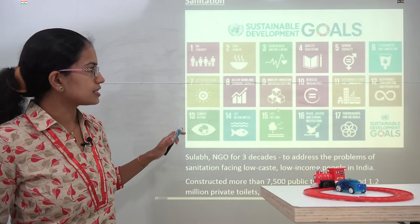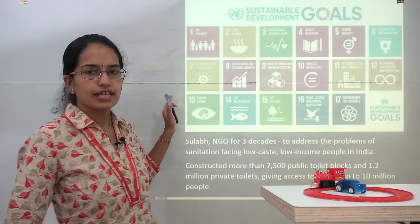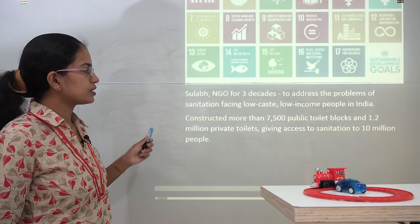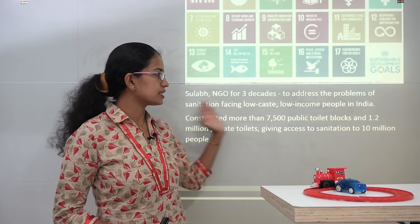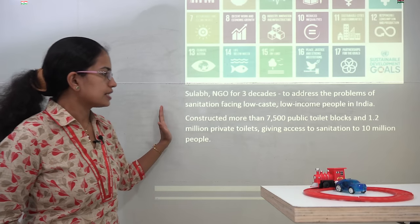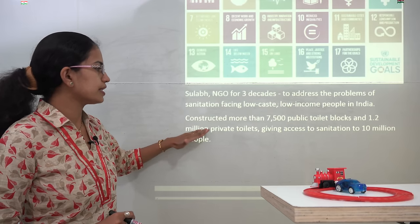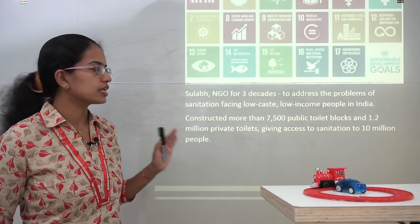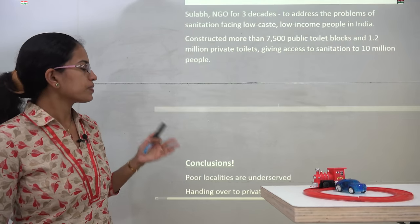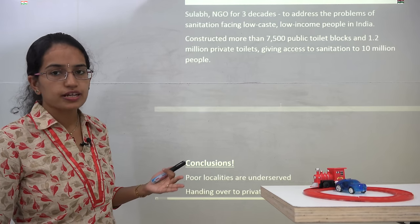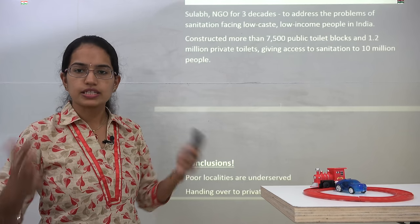Now comes sanitation. One of the Sustainable Development Goals is to provide safe clean drinking water and sanitation. In India, SULABH is one of the NGOs that has been working for more than three decades, aiming to provide sanitation to low-income people. It has constructed nearly 7,500 toilet blocks, and more than 1.2 million private toilets giving access to nearly 10 million people. We have also discussed the current state of sanitation and water supply under government initiatives in India in our earlier classes.